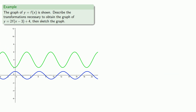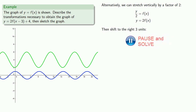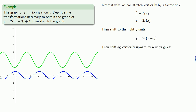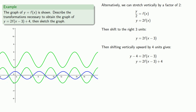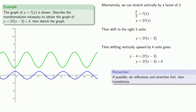An important question to always ask in mathematics and in life is: could this have been done a different way, possibly even a better way? What if we stretch vertically by a factor of two first, then shift to the right by three units, then shift vertically upward by four units? If we stretch, shift right, then shift upwards, we get the same graph as before. This is a little bit easier, and so this suggests that if possible, do reflections and stretches first, then translations.